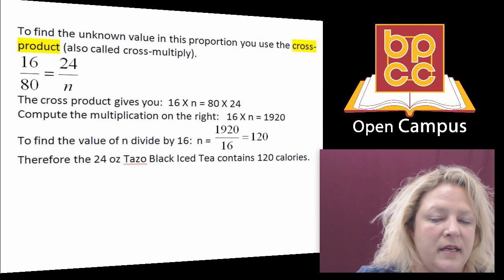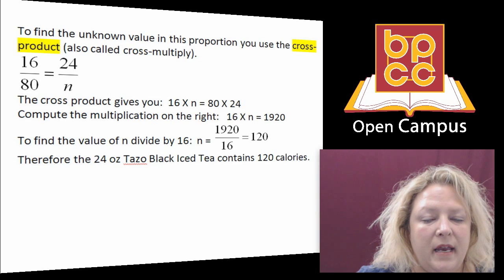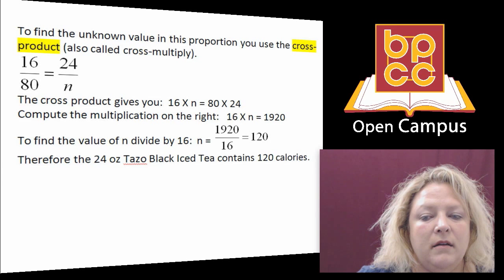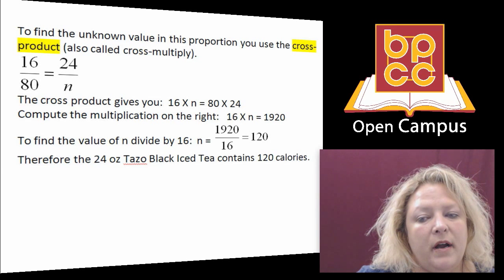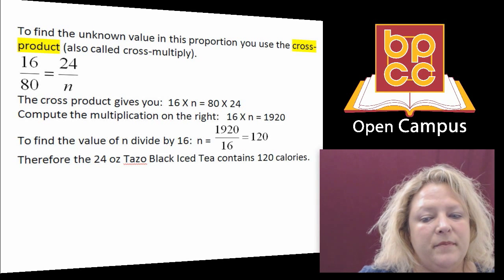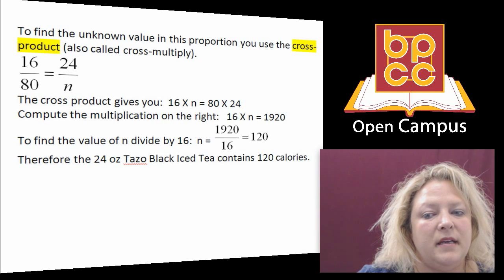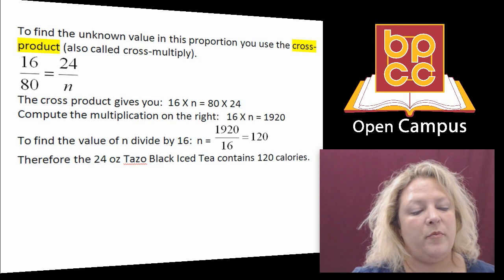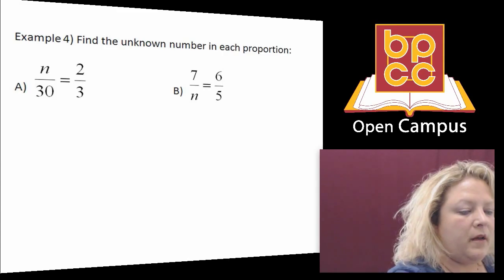16 times N is 16N, and then when you divide, you find out that a 24-ounce Starbucks would be 120 calories for their black iced tea. So we're going to do some basic cross products right now and find our missing number for our proportion.